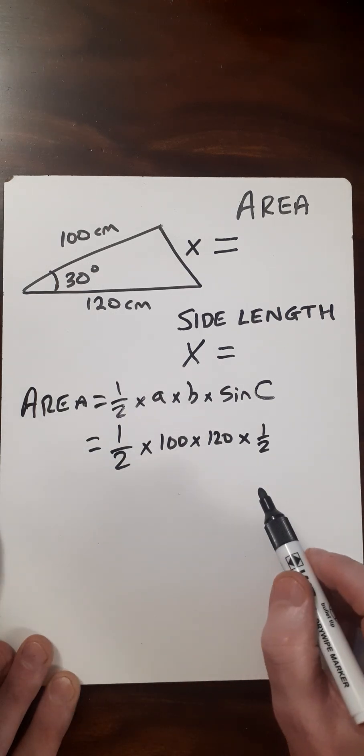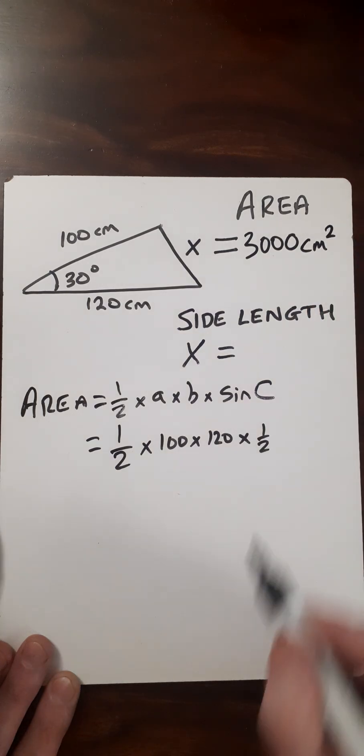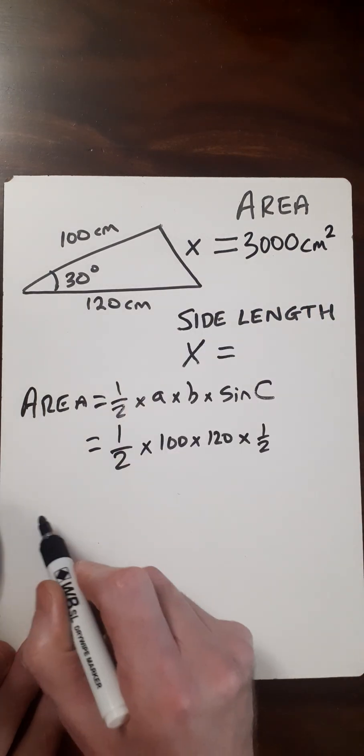Put this in your calculator, you'll get 3000 centimeters squared. Now what we can do to find side length X...